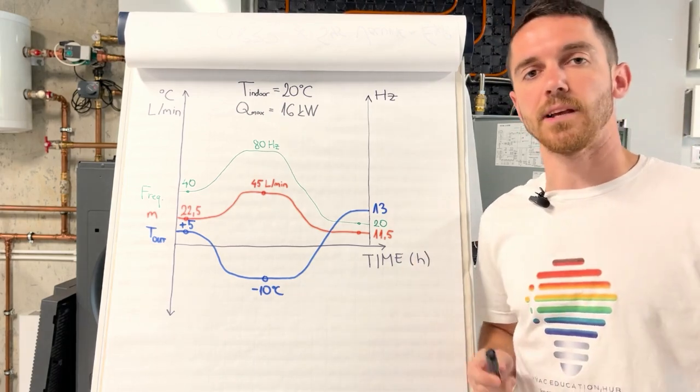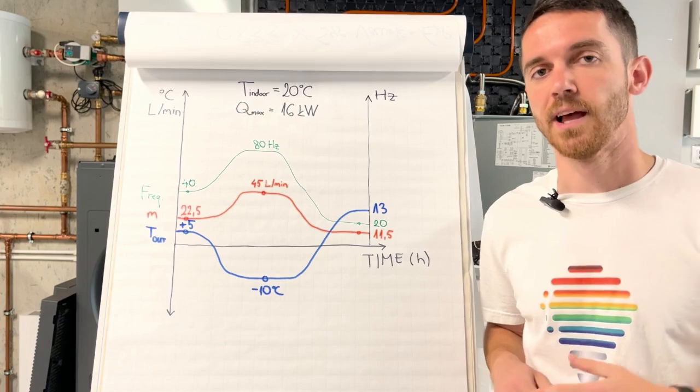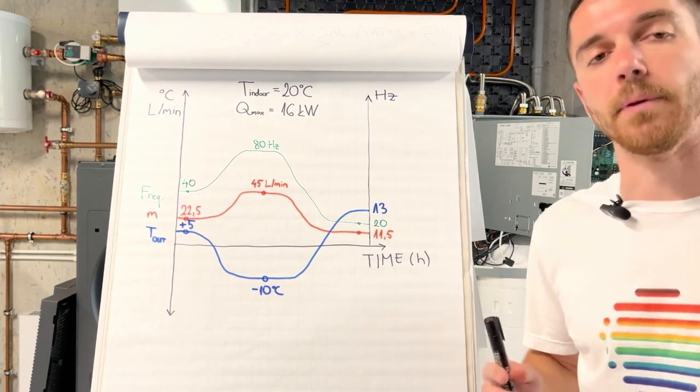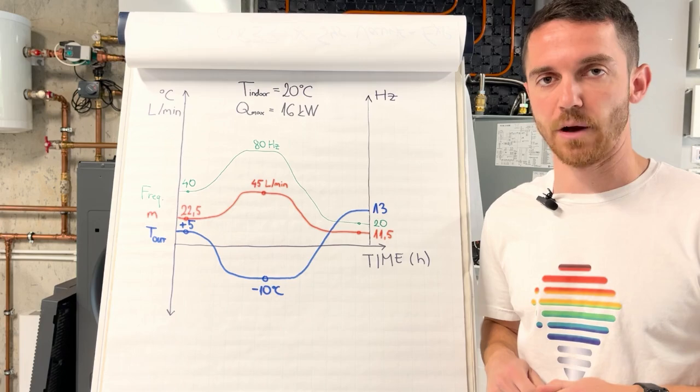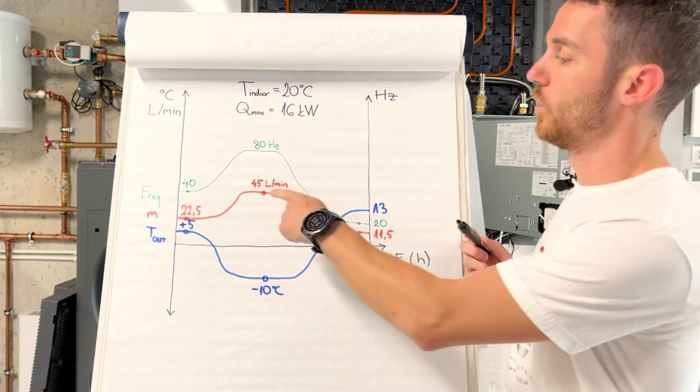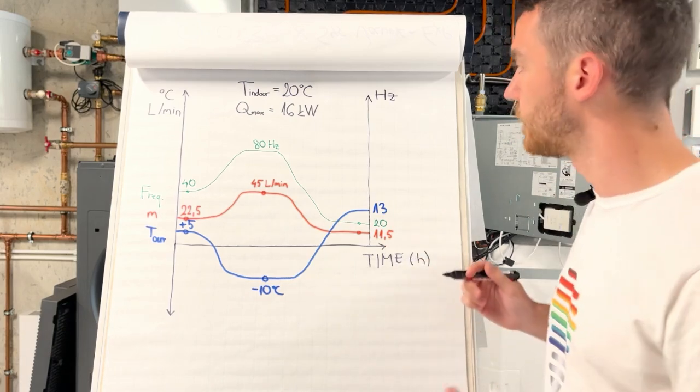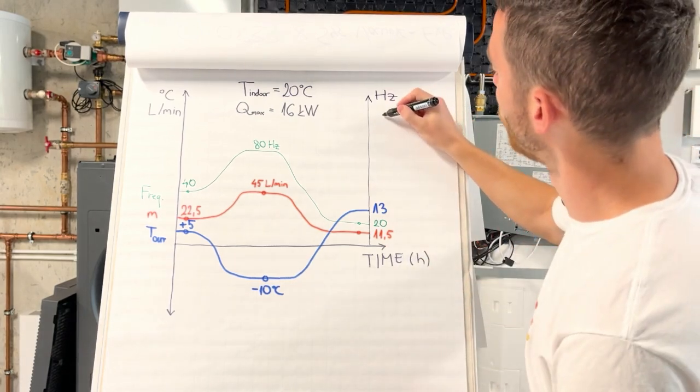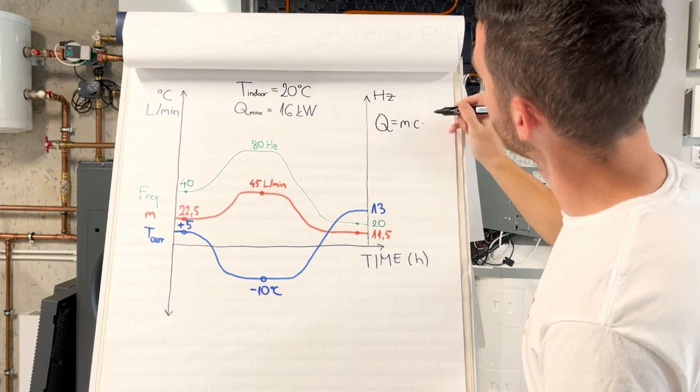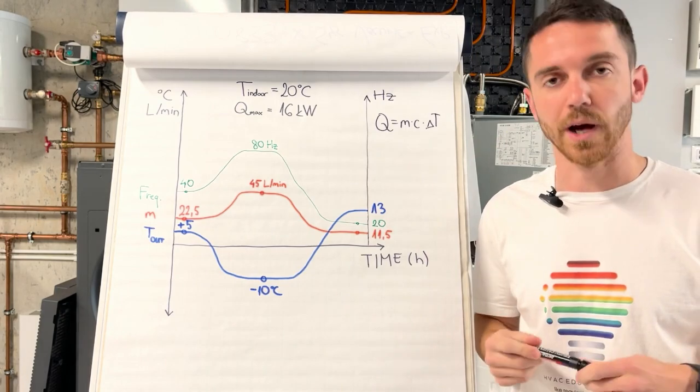Mostly in my videos I put focus on family buildings and houses. In whatever area you live, 16 kilowatt is probably maximum for some family house. For 16 kilowatt, our maximum flow rate is 45 liters per minute. We can calculate it by our formula: heat equals flow rate times specific heat capacity times delta T. We explained this in a previous video.